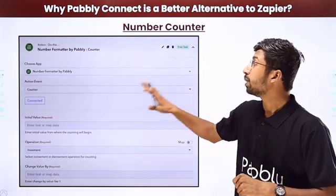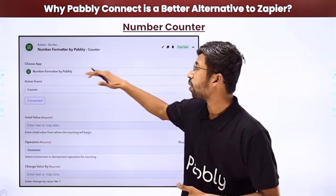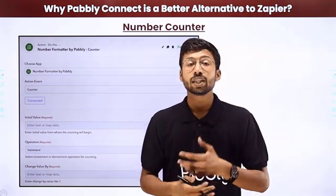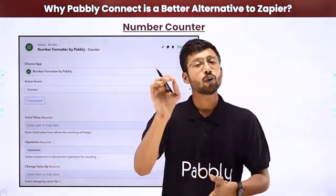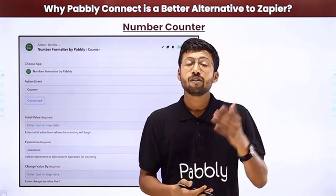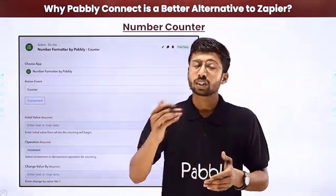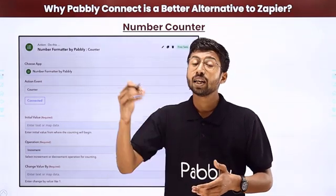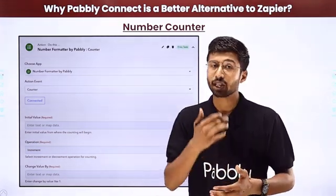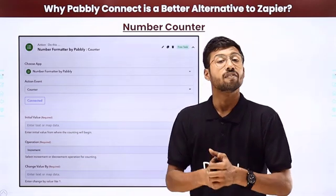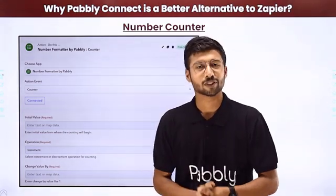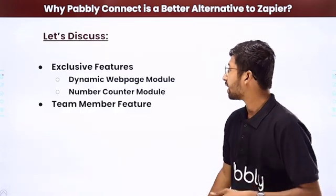Another exclusive feature is the number counter module, found under the number formatter in Pabbly Connect. You can get counting numbers in your automation workflows that increase or decrease with every execution — for example, returning 1 on the first execution, 2 on the second, and so on. You can also edit the initial value and the increment amount, and use this feature to set up a Round Robin algorithm.